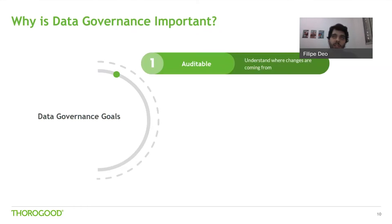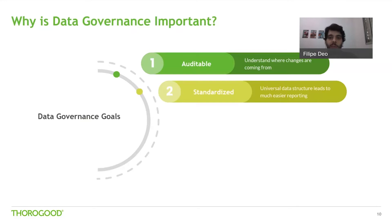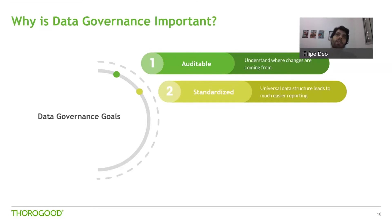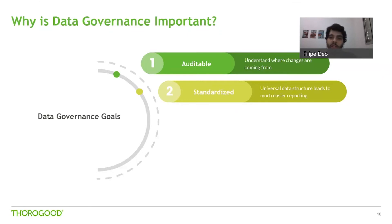When thinking about the importance of data governance, we should consider the main goals companies seek to achieve. First, we have auditable — understanding where changes are coming from. Data governance allows individuals to trust the data flowing through if they know how, when, or who is making transformations. Next is standardized, which is one of the biggest issues we see at our clients: the need to bring together loads of data sources managed separately by different people. Bringing these together into a standard schema accessible by business users allows for much easier structured reporting.